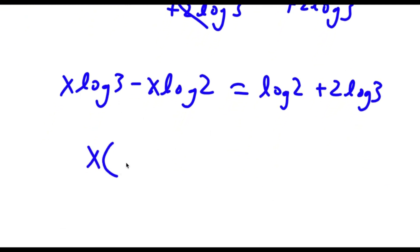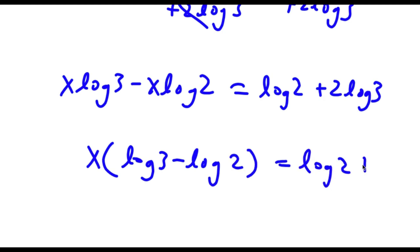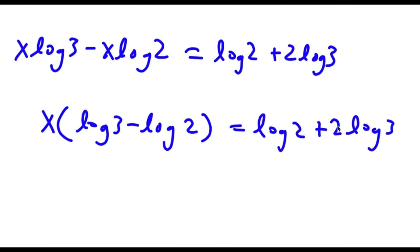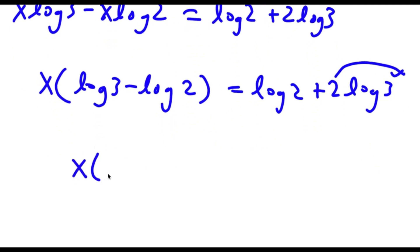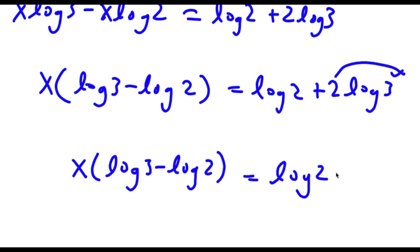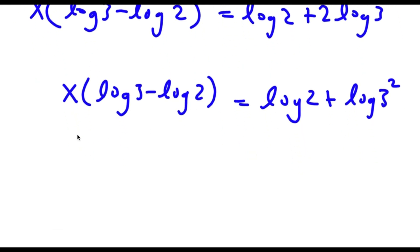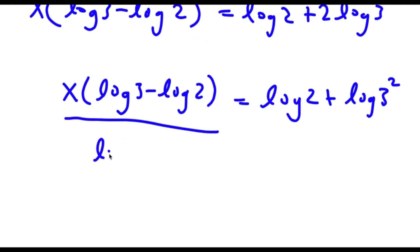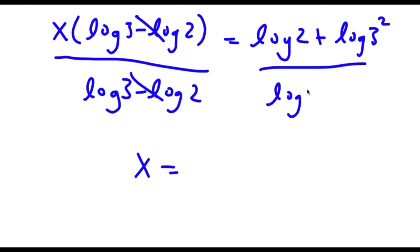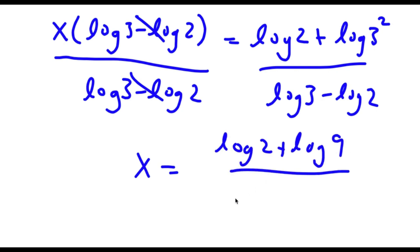Now if I factor out x I have x times log 3 minus log 2 is equal to log 2 plus 2·log 3. Remember I can bring the 2 back as an exponent, so now I have x times log 3 minus log 2 is equal to log 2 plus log 3 squared. If I divide both sides by log 3 minus log 2, those cancel out and I'm left with x equals log 2 plus log 3 squared, all over log 3 minus log 2.